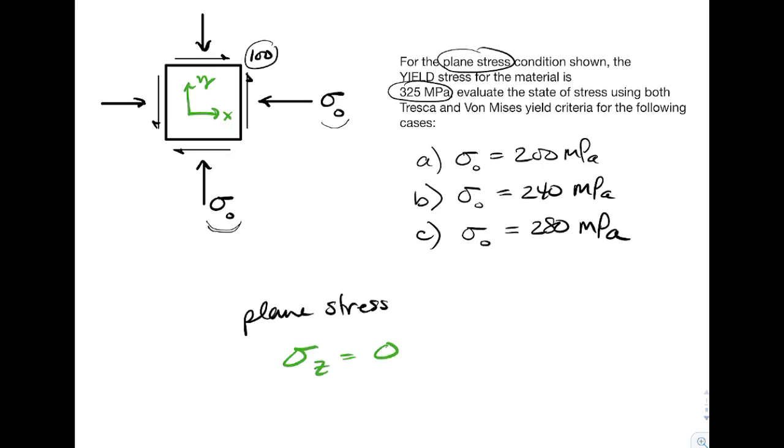I'm going to choose to solve this problem using Mohr's circle. We are looking for principal stresses sigma 1, sigma 2, and sigma 3. That's what we need to proceed into the yield criteria.